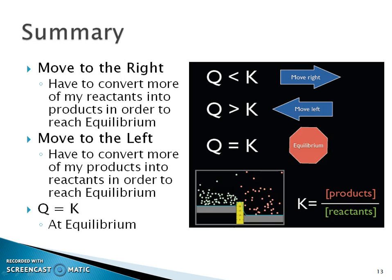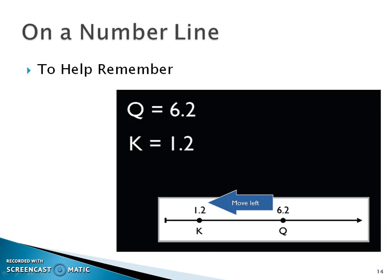The answer lies in how the Q value compares to the K value — how that reaction quotient, using initial concentrations of reactants and products, compares to the equilibrium value. He used a number line to show which way the reaction lies depending on the value of Q versus K. I always say Q before K, because Q represents initial concentrations and K represents equilibrium concentrations.